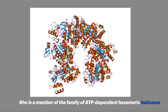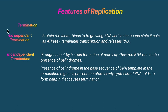Termination involves the Rho factor. Rho factor is a helicase family member and a hexameric protein. In Rho-dependent termination, the Rho factor binds and acts as an ATPase to terminate transcription.